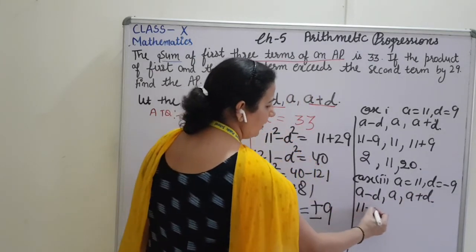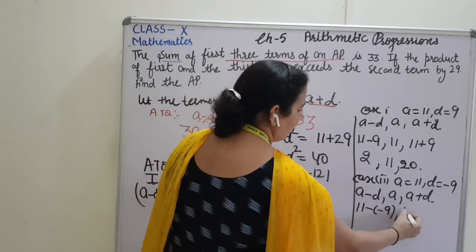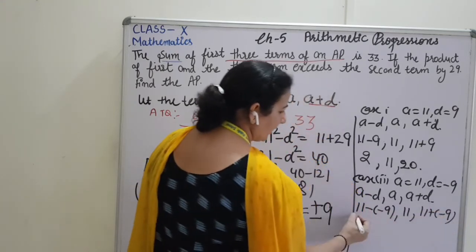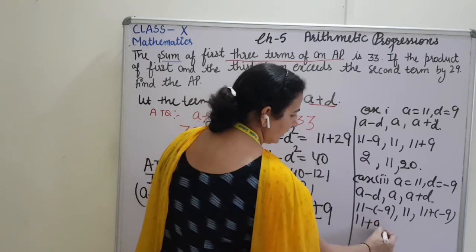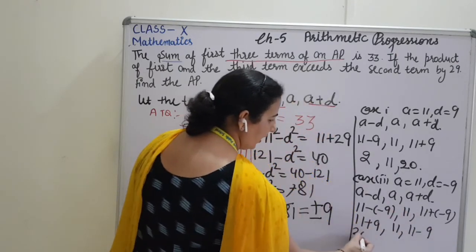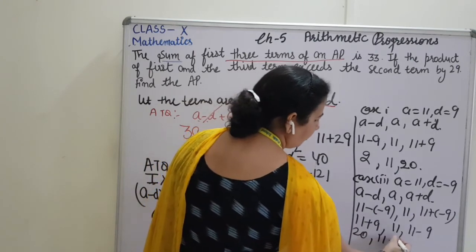Just put the values here: minus 9, 11, 11 plus minus 9. And they will be 11 plus 9, 11, 11 minus 9. And the answer will be 20, 11, 2.